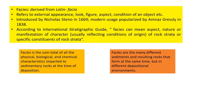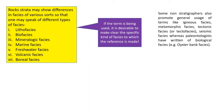These are all very peculiar characteristics. Facies are the many different sediments and resulting rocks that form at the same time but in different depositional environments. So it is quite possible that facies may form at the same time but their environments of formation may be different. On the basis of differences in facies of various sorts in the rock strata, there could be different types of facies — and this list is not exhaustive. We can use lithofacies, biofacies, mineralogic facies, marine facies, freshwater facies, volcanic facies, boreal facies.